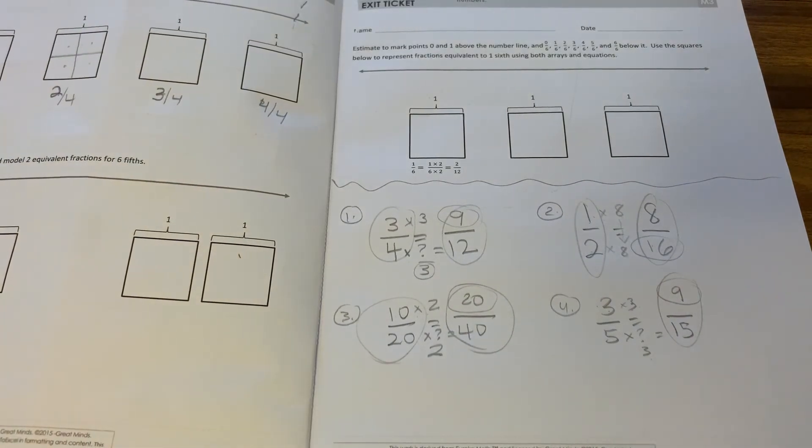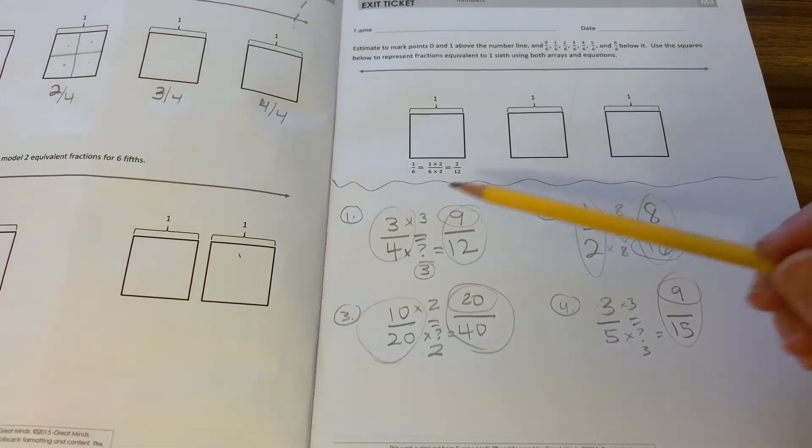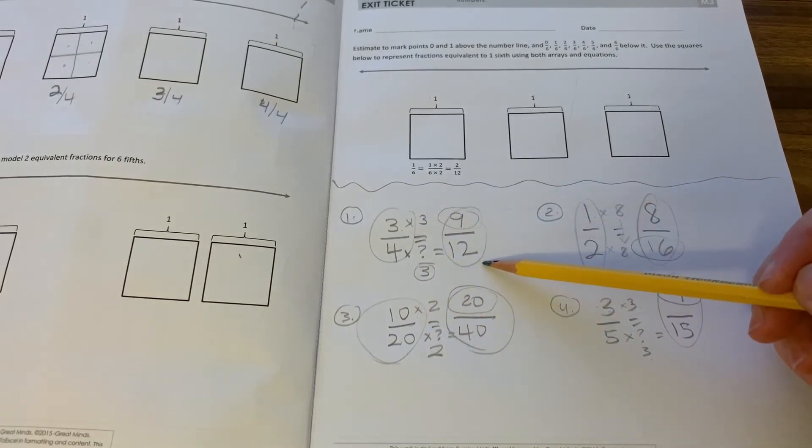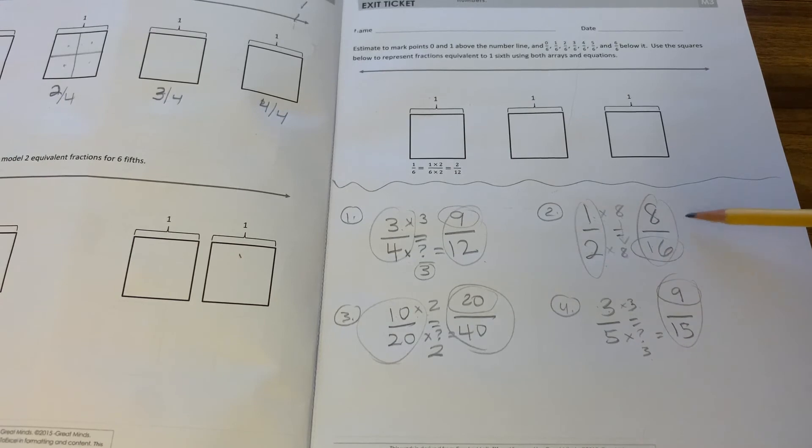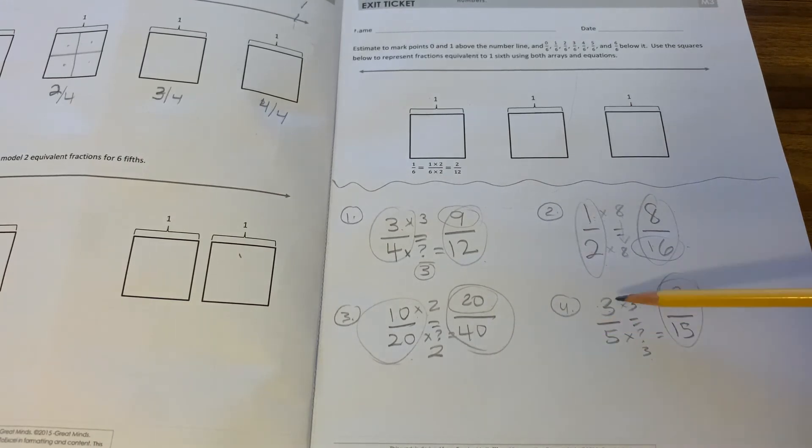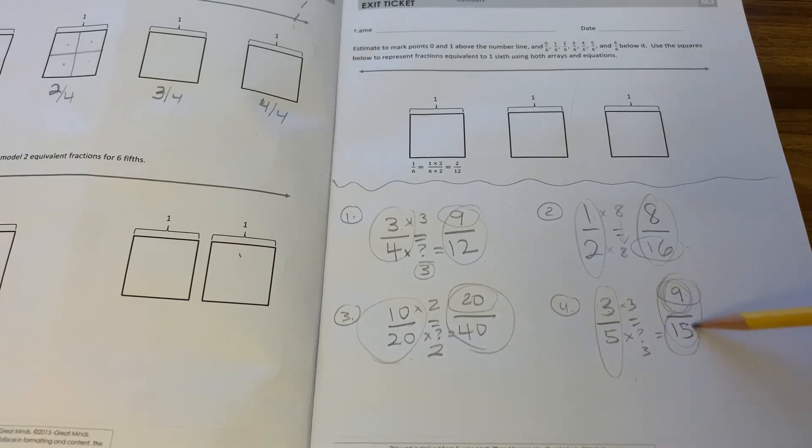To end, let's practice saying these fractions. You can repeat after me. Three fourths. Nine twelfths. One half. Eight sixteenths. Ten twentieths. Twenty fortieths. Three fifths. Nine fifteenths. Very good. And remember, the top number is called the numerator. Very good. And the bottom number is called the denominator. And this line indicates division.